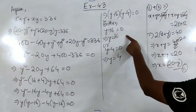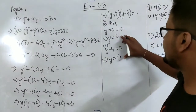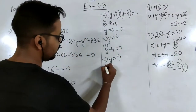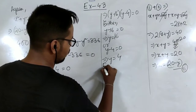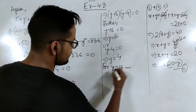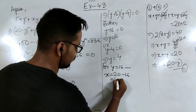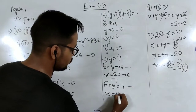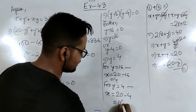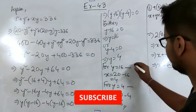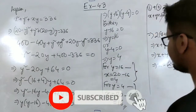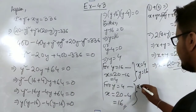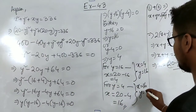We have got two values: y equal to 16 and y equal to 4. Taking these and putting them into equation 3 (x plus y equals 20) to find x: for y equal to 16, x equals 20 minus 16 which is 4; and for y equal to 4, x equals 20 minus 4 which is 16. So we have two sets of solutions.